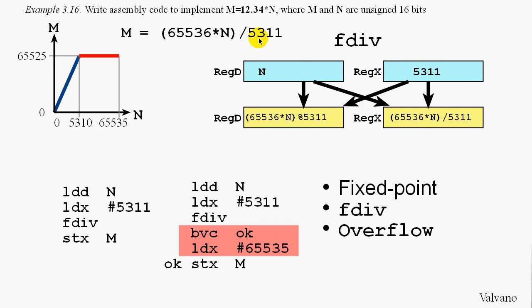So, in summary, we used fixed point to represent this non-integer value of 12.34. And we did it using the two integers 65536 and 5311. And that quotient is approximately equal to 12.34. And second, we used the FDIV instruction in order to perform this multiply and division in one step, making our program run real fast. And thirdly, we considered overflow. Overflow occurs when the output is too large to fit back into our register. In this case, we used a conditional branch instruction such that the output had a particular value if it were not correct. Thank you very much.